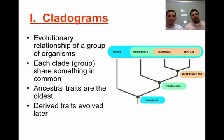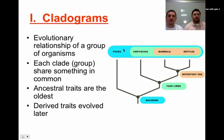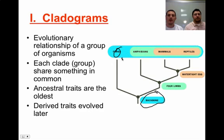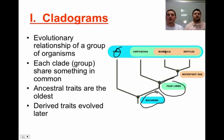In this diagram, the most ancestral trait starts at the bottom left with fish. Fish are highlighted in blue, meaning they have a derived backbone — so everything in blue has a backbone: fish, amphibians, mammals, and reptiles. Moving up, amphibians gain a green color denoting four limbs, so amphibians, mammals, and reptiles all have four limbs. The last derived trait is the watertight egg, shared by mammals and reptiles.